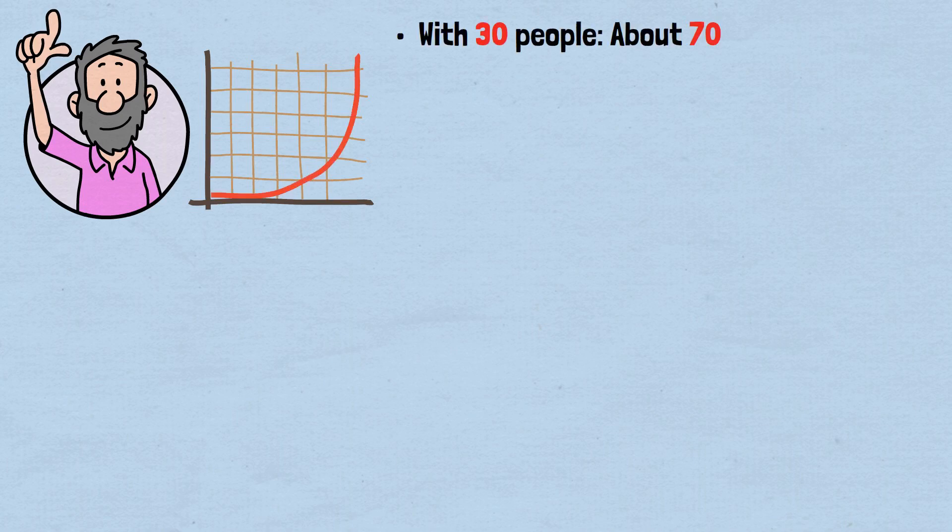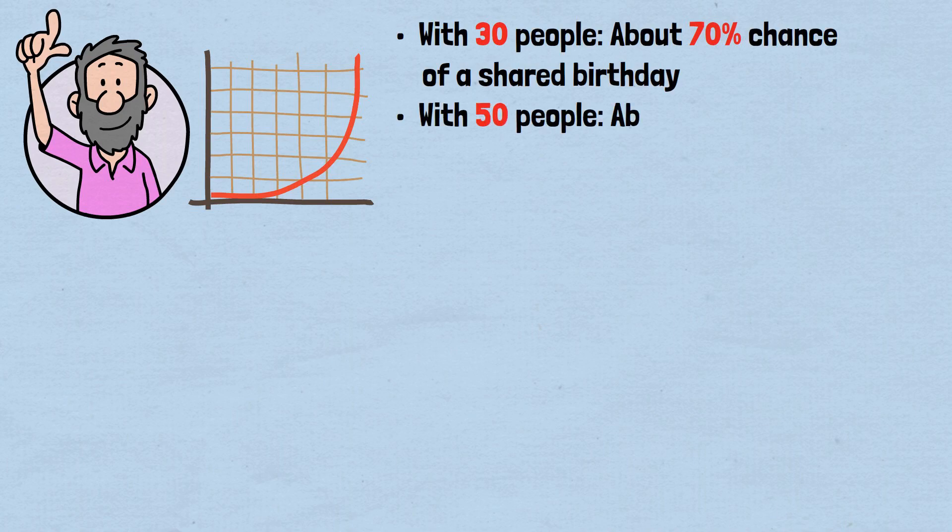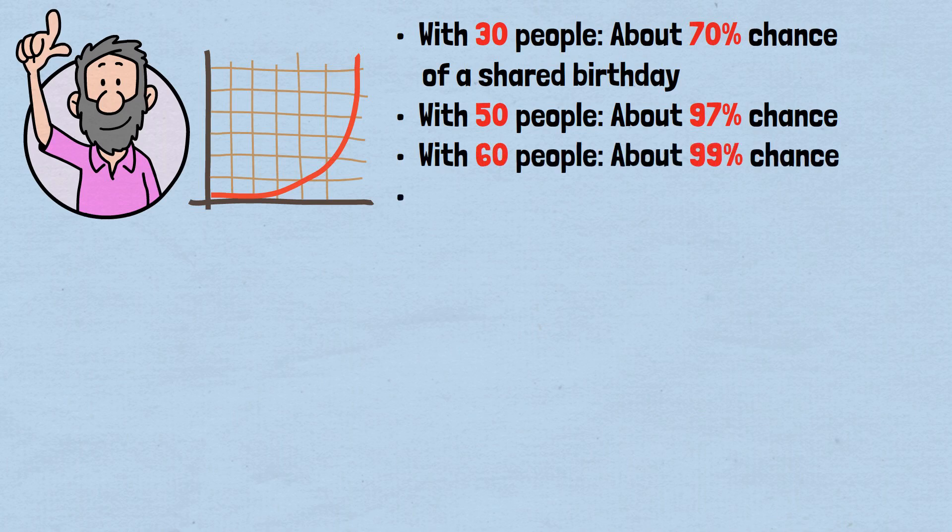With 30 people, about 70% chance of a shared birthday. With 50 people, about 97% chance. With 60 people, about 99% chance with 75 people. About 99.9% chance.